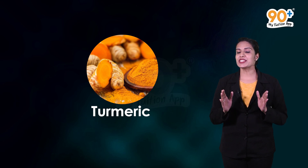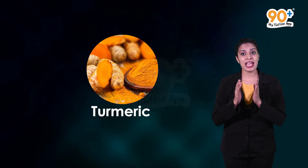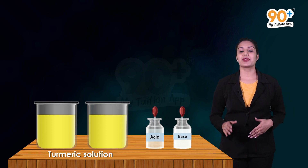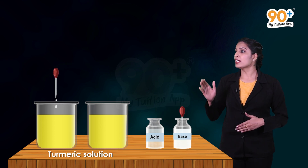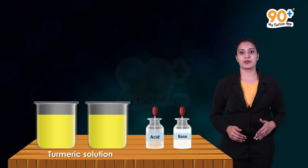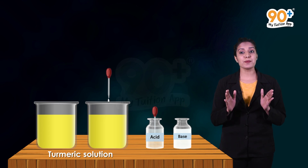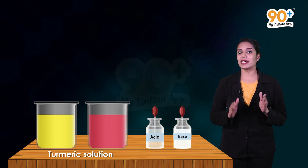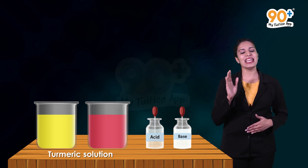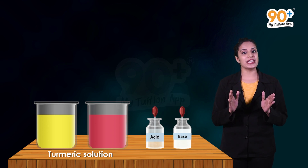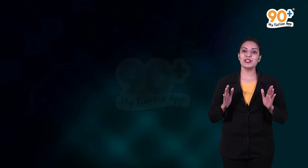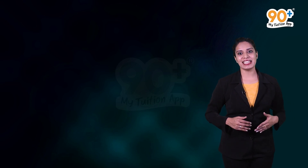Turmeric, which we use in our homes, is the best example of a natural indicator. Turmeric changes its color in the presence of acids and bases. In the presence of acid, turmeric remains yellow, but in the presence of alkaline substances it turns red. Hence, turmeric is an ideal natural indicator for doing experiments with vinegar, citric acid, or baking soda.